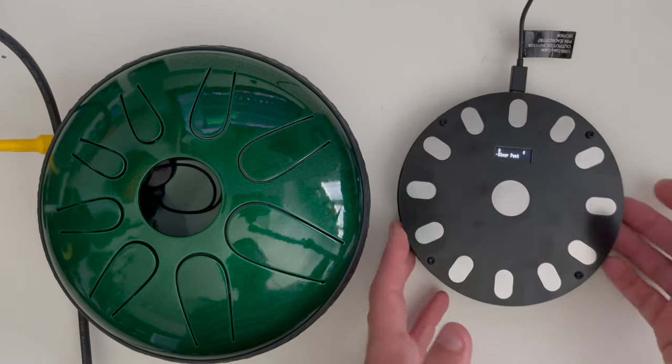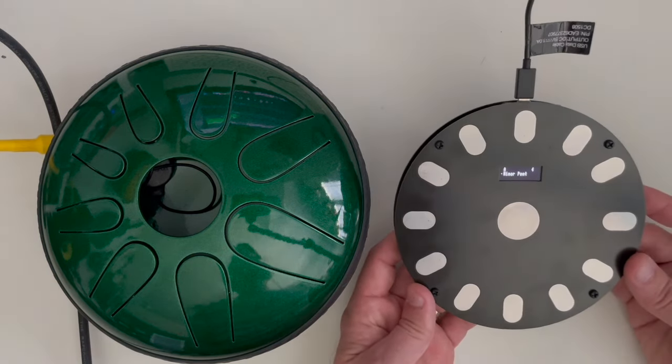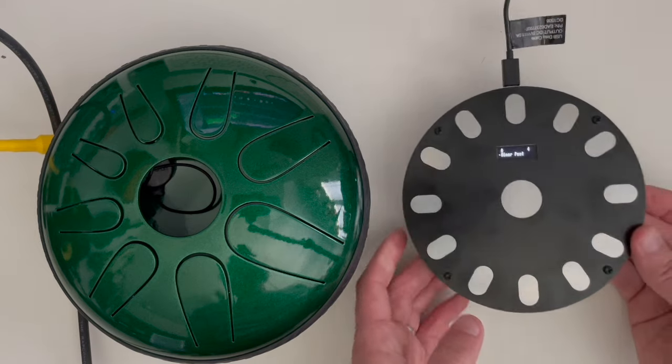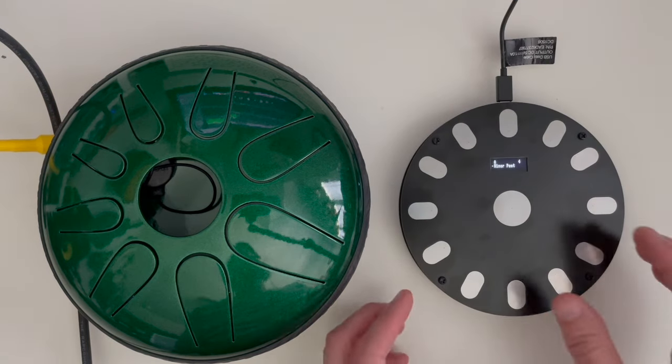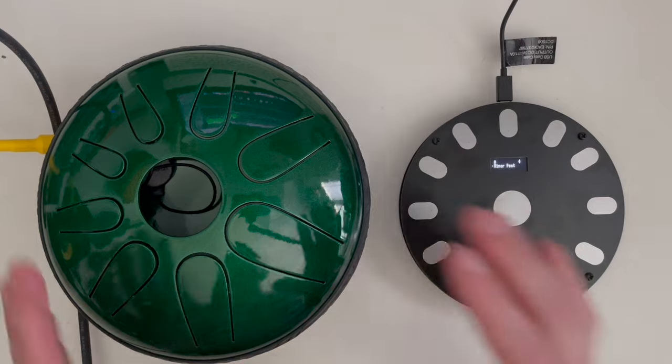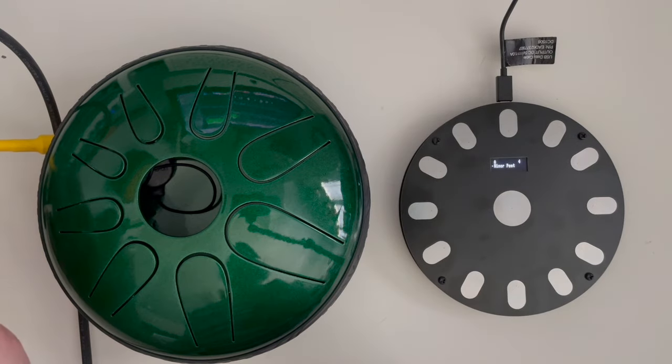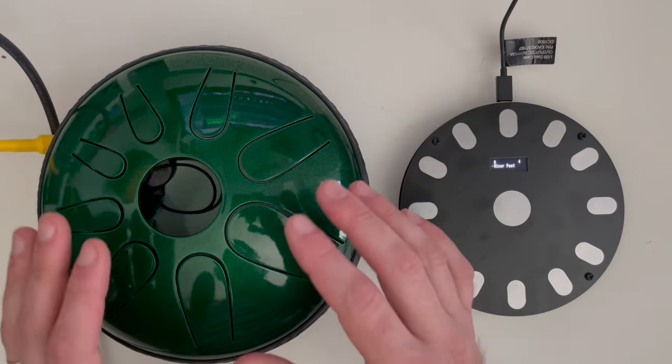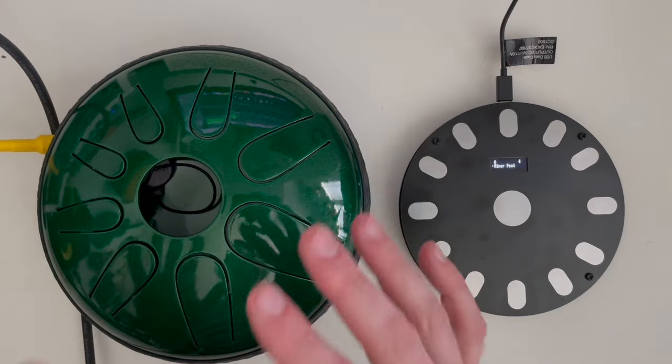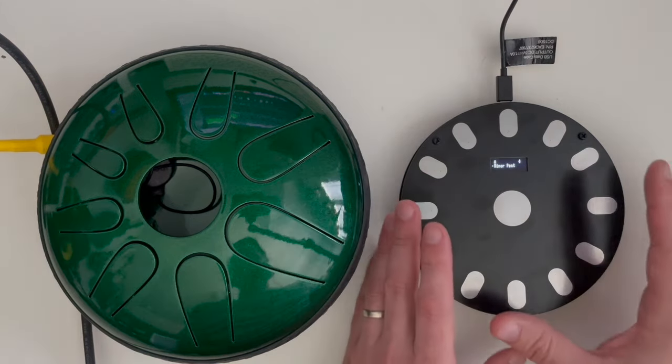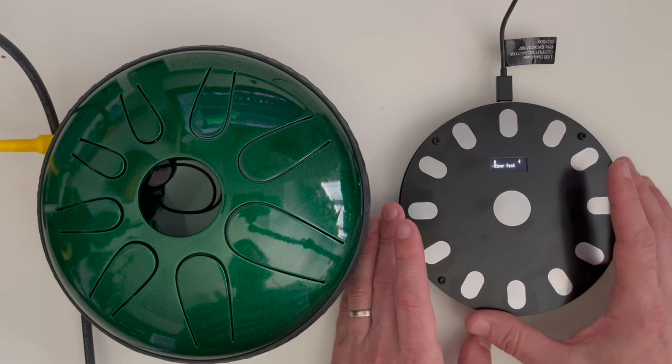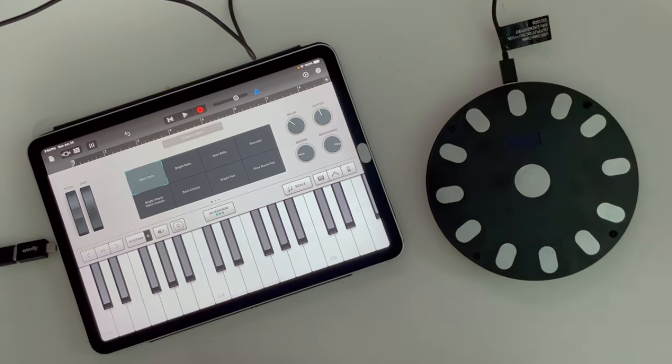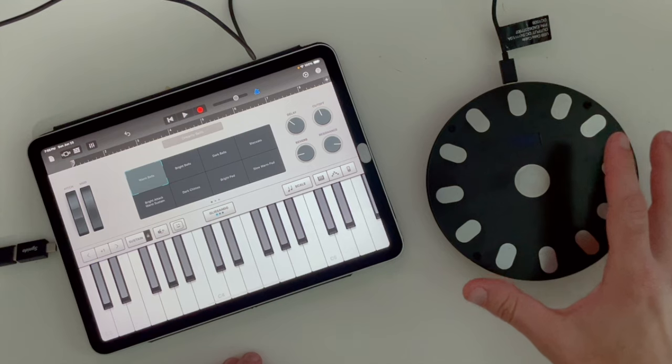Now another difference - of course this is a MIDI controller so it doesn't make any actual sounds on its own. It's not an acoustic instrument, whereas this is an acoustic instrument. Yes, I'm using it as an electric instrument here, but I can just as easily play it and get tones out of it. I can take it out in the woods or something like that and play it. Well, I actually realized you can do the same thing with this.